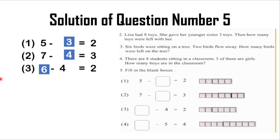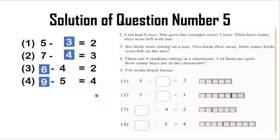Now question 4: blank minus 5 equals 4. You can see that 5 plus 4 equals 9, so the answer is 9. Therefore 9 minus 5 equals 4. I hope you all were able to understand question number 5 and all the questions mentioned on page number 50.